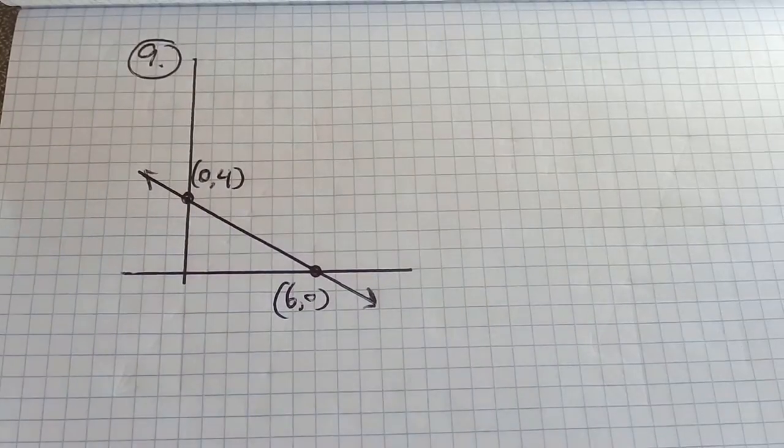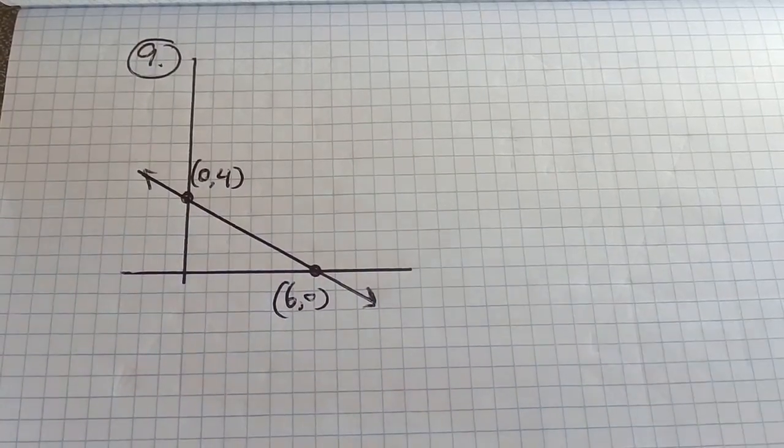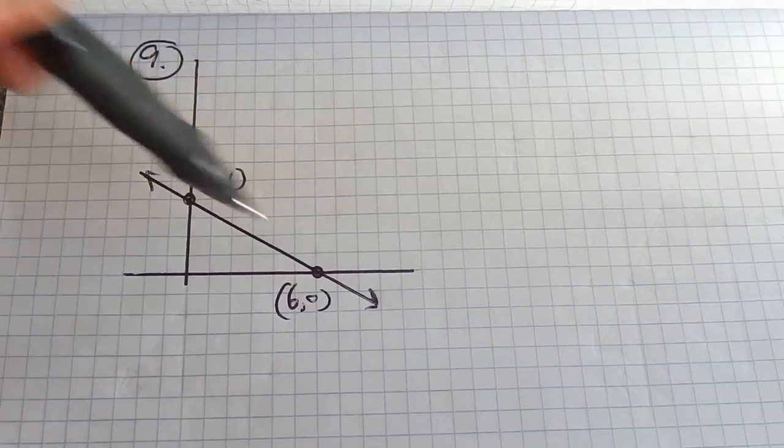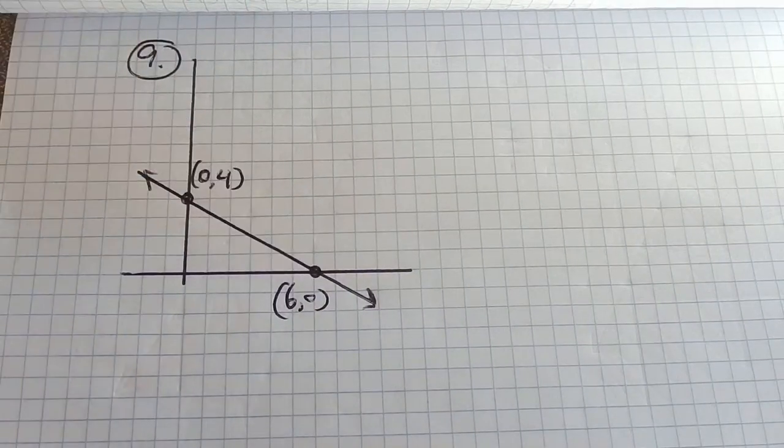This is Math 98, Practice Test 1, question number 9. On question number 9, we're supposed to write an equation for this situation. I have a line, and I know two points that it goes through.